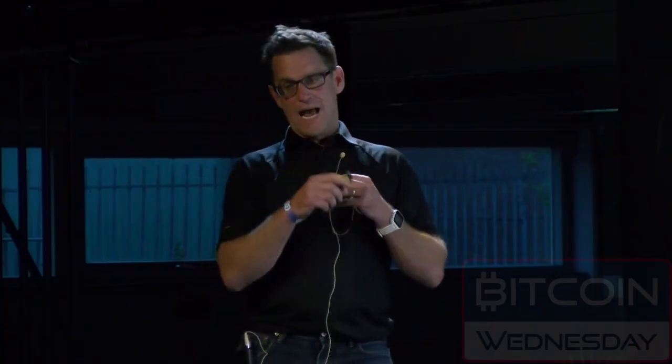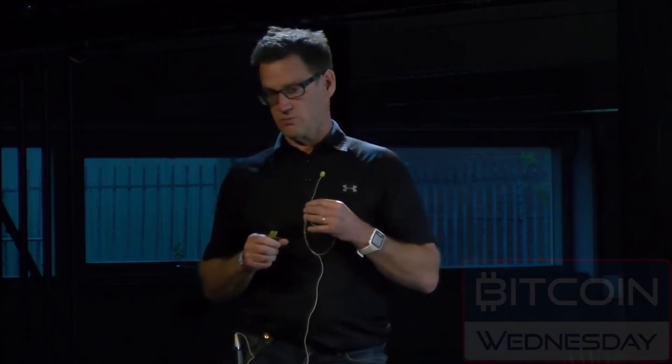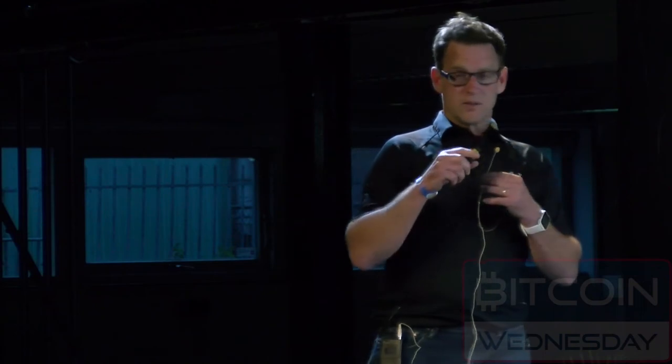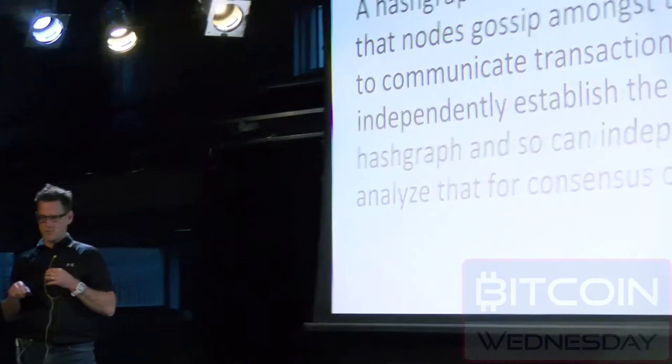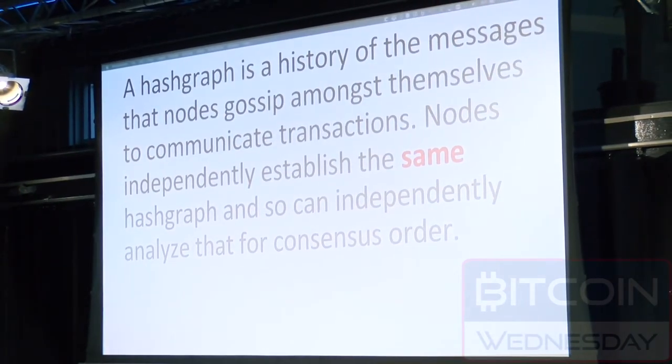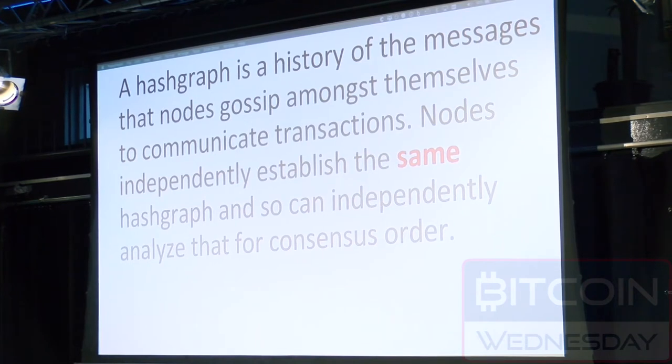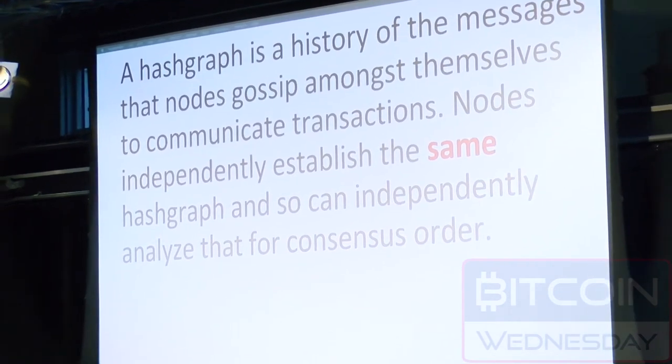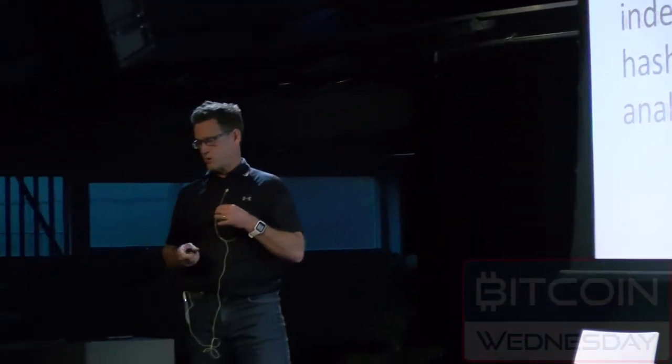A Hashgraph is a DAG, and the edges in our DAG represent messages — we actually represent a history of the messages that float amongst the participants. All nodes are able to build a consistent picture of that messaging history. They're able to extract temporal information from that data structure consistently, so that they all get the same answers. We set out to define an order that everybody can agree on for a set of transactions.